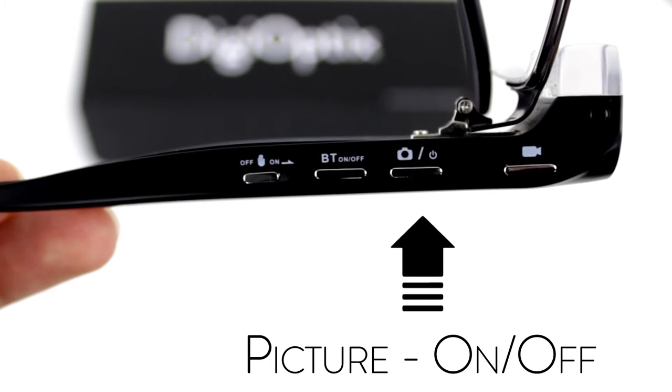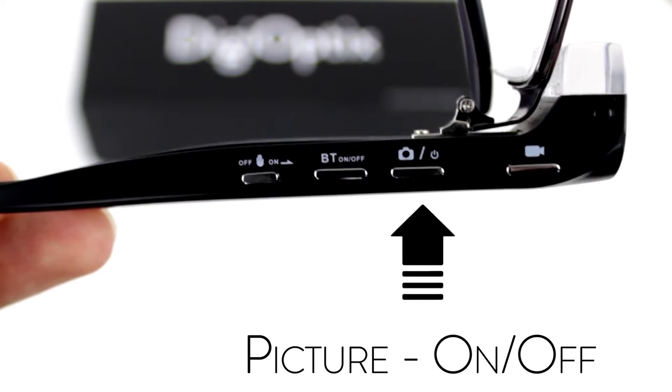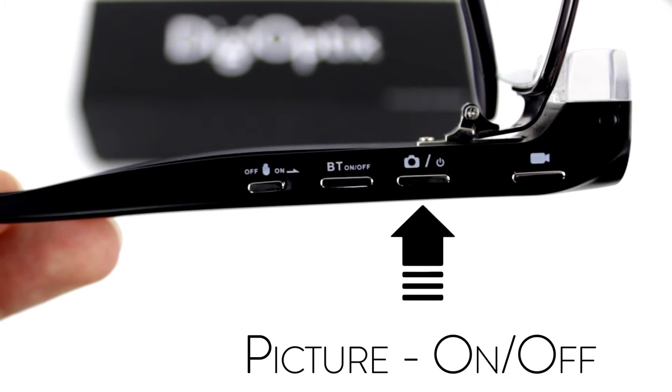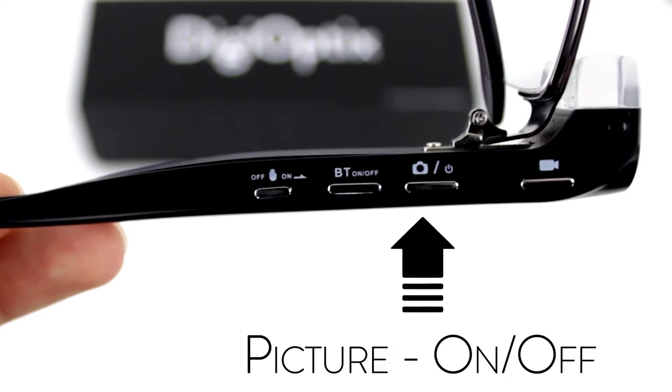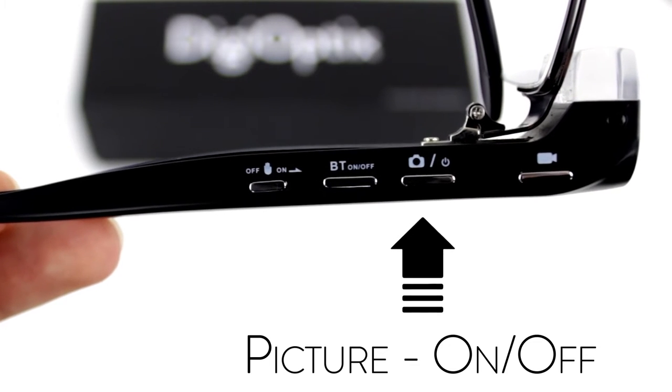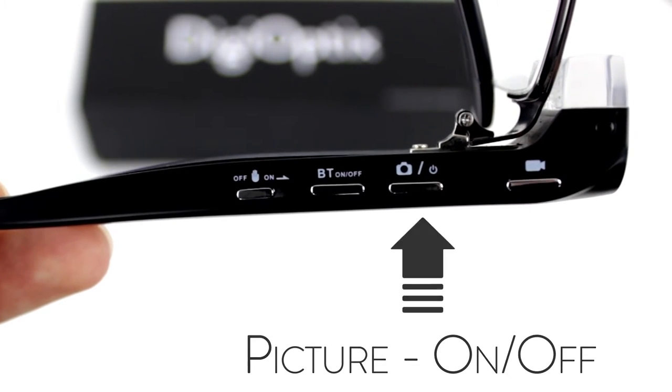The next button is your picture on/off switch. While the glasses are on, you can press this button to easily snap a picture. To turn the glasses on or off, hold the button down for 5 seconds.